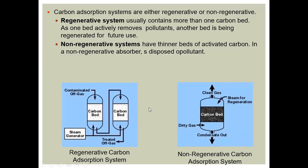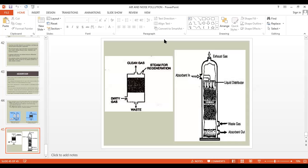Carbon adsorption systems are either regenerative or non-regenerative. The regenerative system usually contains more than one carbon bed — as one bed actively removes pollutants, another bed is being regenerated for future use. The non-regenerative system has thinner beds of activated carbon, and in the non-regenerative absorber, the carbon is disposed of along with the pollutants. If you have any confusion about the different types of pollutants, devices, or systems, you can contact me.